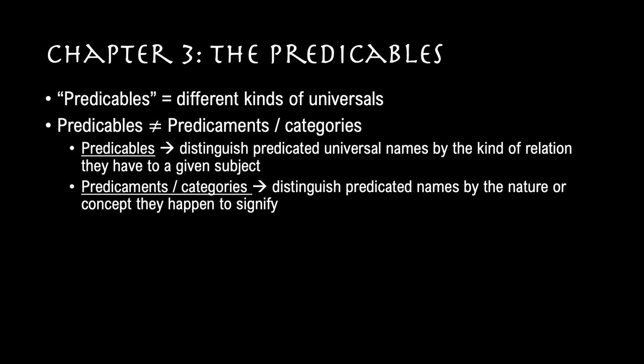Chapter 3 of Aristotle's Categories continues Aristotle's analysis of names considered in their relationship to one another. It discusses, very briefly, something that later tradition will call the predicables — the different kinds of universals, since universals are things that are predicable of a subject. Predicables should not be confused with predicaments or categories. Predicables distinguish predicated universal names by the kind of relation they have to a given subject, whereas predicaments or categories distinguish predicated names by the nature or concept they happen to signify. These are very distinct concepts and should not be conflated.